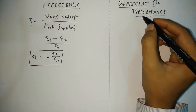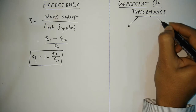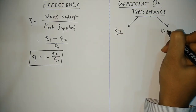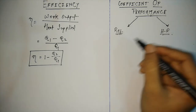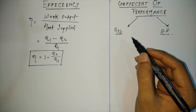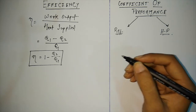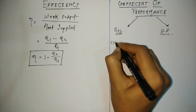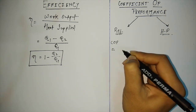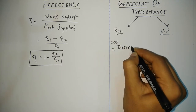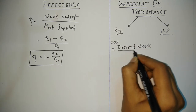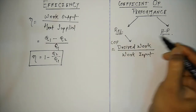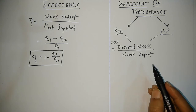Now let us look at the coefficient of performance. We will take into account two separate equations: the coefficient of performance of a refrigerator and the coefficient of performance of a heat pump. In both cases, coefficient of performance is defined as desired output divided by work input.